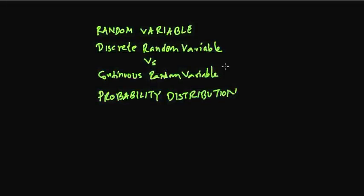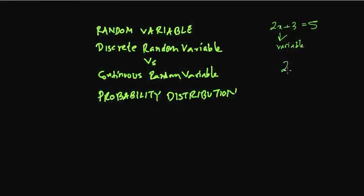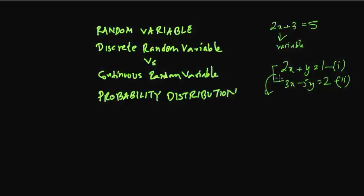The very important concept here is: what is a random variable? When we talk about a variable, we have been used to the variable in algebra. A variable is something of value that varies. For example, in the linear equation 2x + 3 = 5, x is the variable — the unknown value we need to find. We can also have two simultaneous equations like 2x + y = 1 and 3x − 5y = 2, where x and y are both variables to be solved.